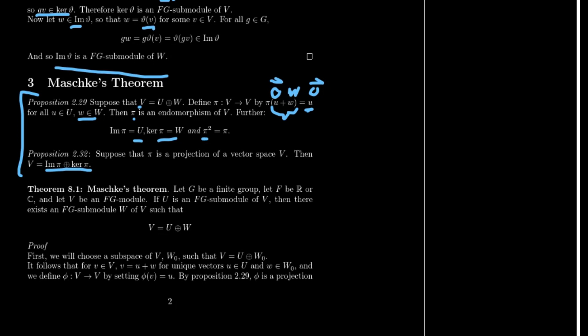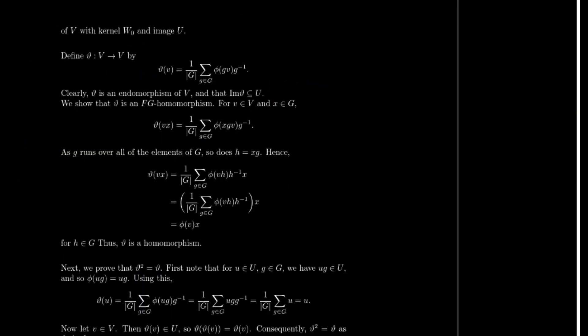Now with those two propositions in our tool belt, we are ready to prove Maschke's theorem. First, we're going to choose a subspace of V, call it W₀, such that V is going to be the direct sum of U and W₀. It follows that for any V in V, V is going to equal a unique vector U and a unique vector W. And we're going to define φ from V to V by setting φ of V equal to U. So this is going to be that same kind of π we saw earlier in proposition 2.29. And so, surprise surprise, by proposition 2.29, φ is a projection of V with kernel W₀ and image U. So far so good.